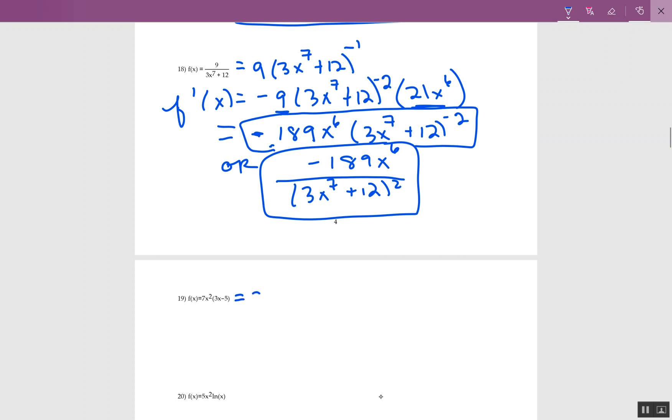The 3x minus 5 doesn't have a power, so I can multiply through. So 7x squared times 3x is 21x cubed. 7x squared times 5 is minus 35x squared. So if you want to do the product rule, I can get away from it because there's no power to that 3x minus 5, so I just did distribution of the 7x squared.